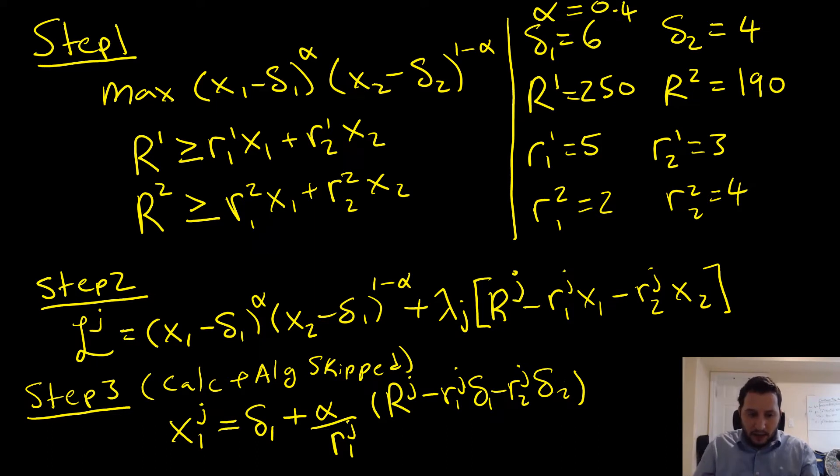Step number three is that we're going to solve for our input demands. Now, the calculus and algebra is skipped here, because this is exactly the same as solving for the demand with respect to a single constraint. Now, I just wrote down one demand equation down here. But we can easily change this to be for our second demand equation by just changing a few numbers. And there we go. That is for our second equation that we have here.